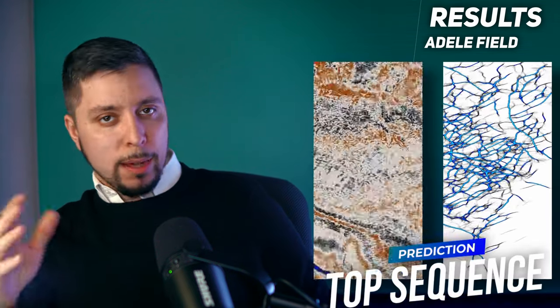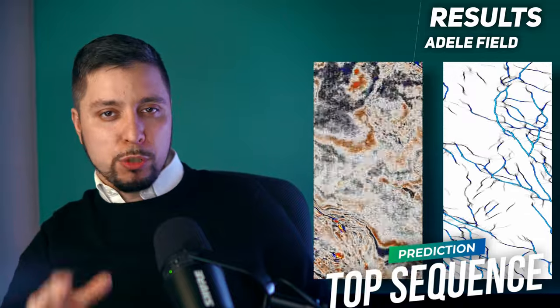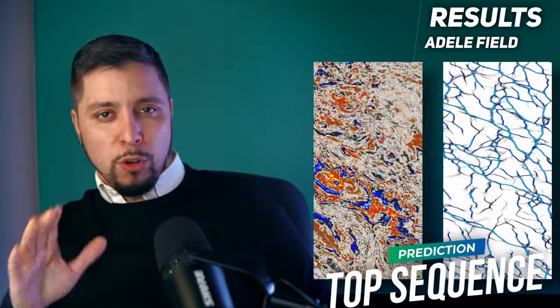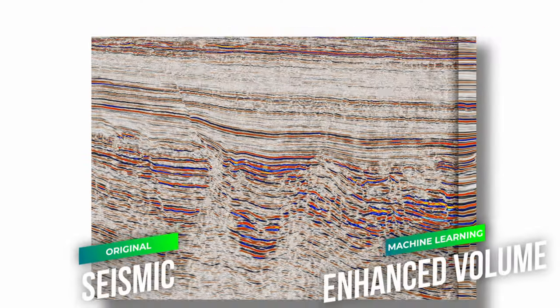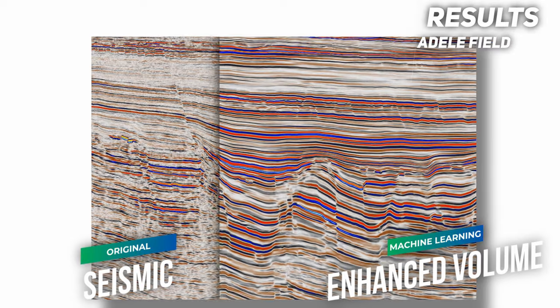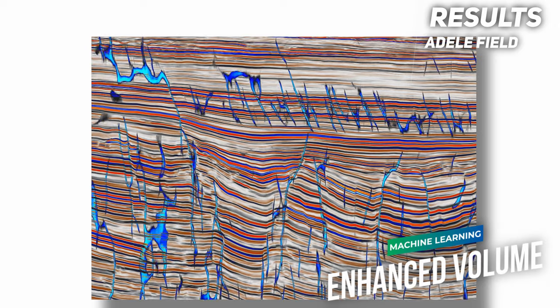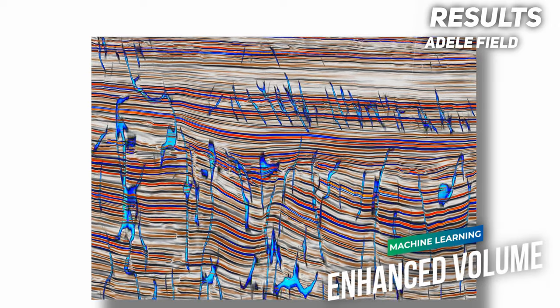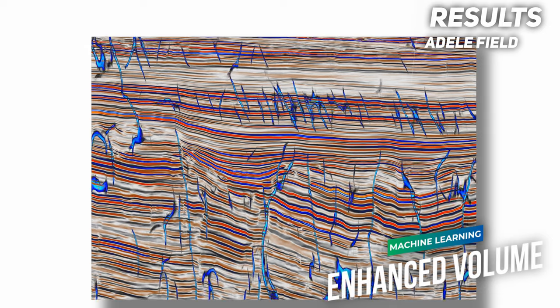Because the seismic volume has some problems with random noise and complex geological structures, it is difficult to evaluate the results of the proposed workflow. For demonstration purposes, I have applied machine learning seismic structure enhancement that removes all the noise and tries to restore structural information. Here you can see the overlay of the prediction by the one-shot transfer learning framework with the enhanced volume.